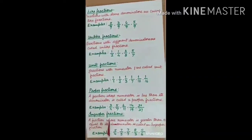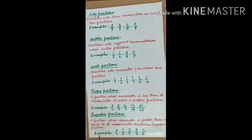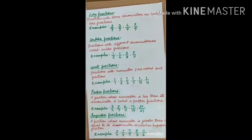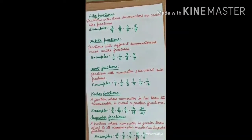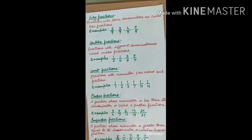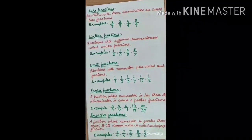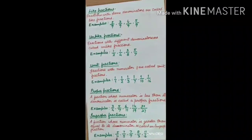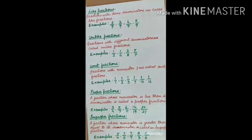Improper fractions: a fraction whose numerator is greater than or equal to its denominator is called an improper fraction. For example, 5 upon 4, 7 upon 5, 7 upon 7, 8 upon 3, and 11 upon 6. For example, in 5 upon 4, since 5 is greater than 4, the numerator is greater than the denominator, so this is an example of an improper fraction.